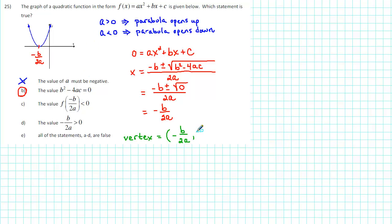The corresponding y-value of the vertex can be found by substituting -b/2a into the quadratic function. We get f(-b/2a).